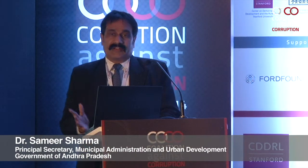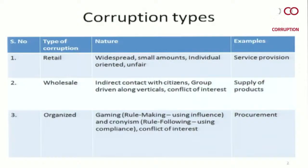The first question: what is retail corruption? The types of corruption in India can be divided into three categories. Retail corruption is widespread, largely small amounts, individual oriented, and pretty unfair. For example, you go for a birth and death certificate and have to pay something for service provision, which is actually a right.